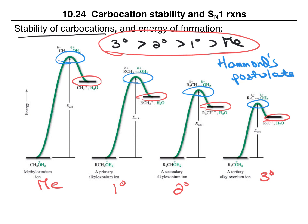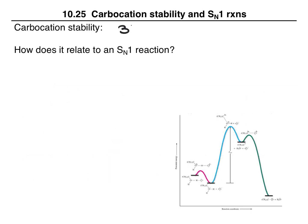We have information on the relative energies of the transition states. Those energies of the transition states determine the activation energy, and the activation energy is what determines the rate of the reaction. So understanding carbocation stability gives us information on the reaction rate of any reaction that goes through a carbocation. A tertiary carbocation is more stable than a secondary, which is more stable than a primary, which is more stable than a methyl.